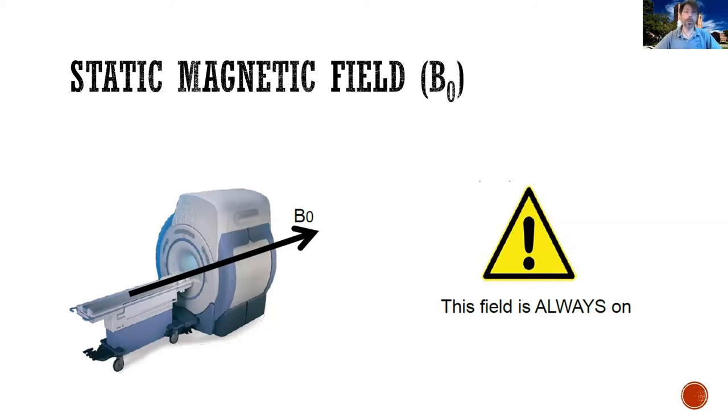Now, the first source of danger is the static magnetic field, so B0. Remember, B0 is the magnetic field created by the MRI machine coil, by the main coil. So when we say that a machine is three Tesla, that's what we mean. That's B0.